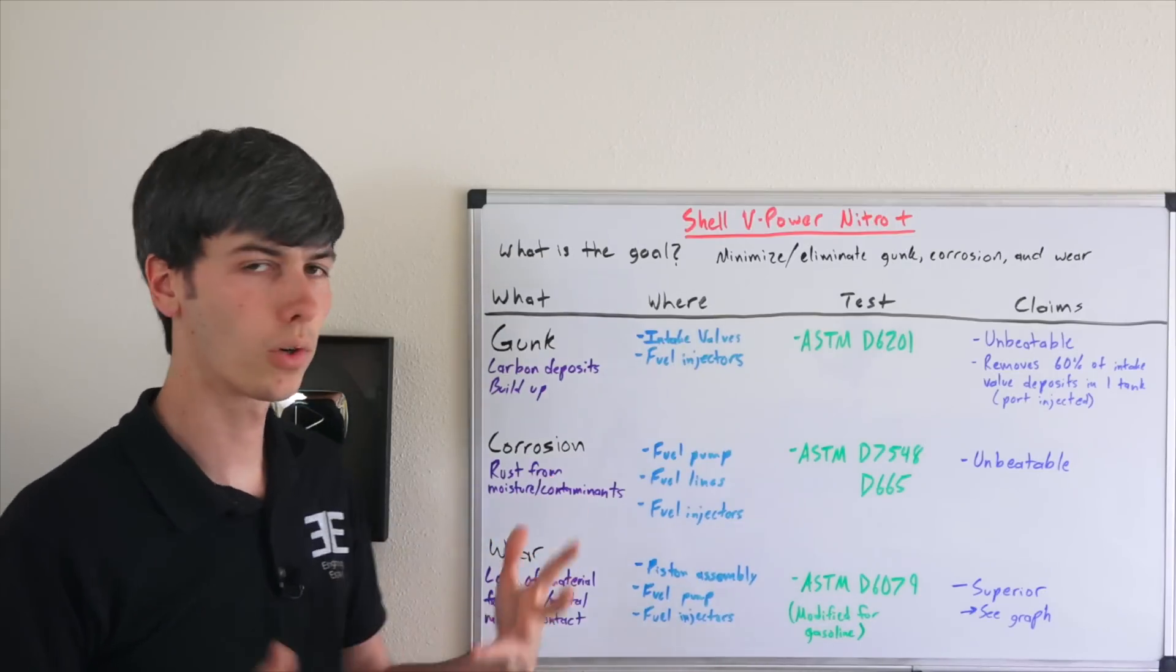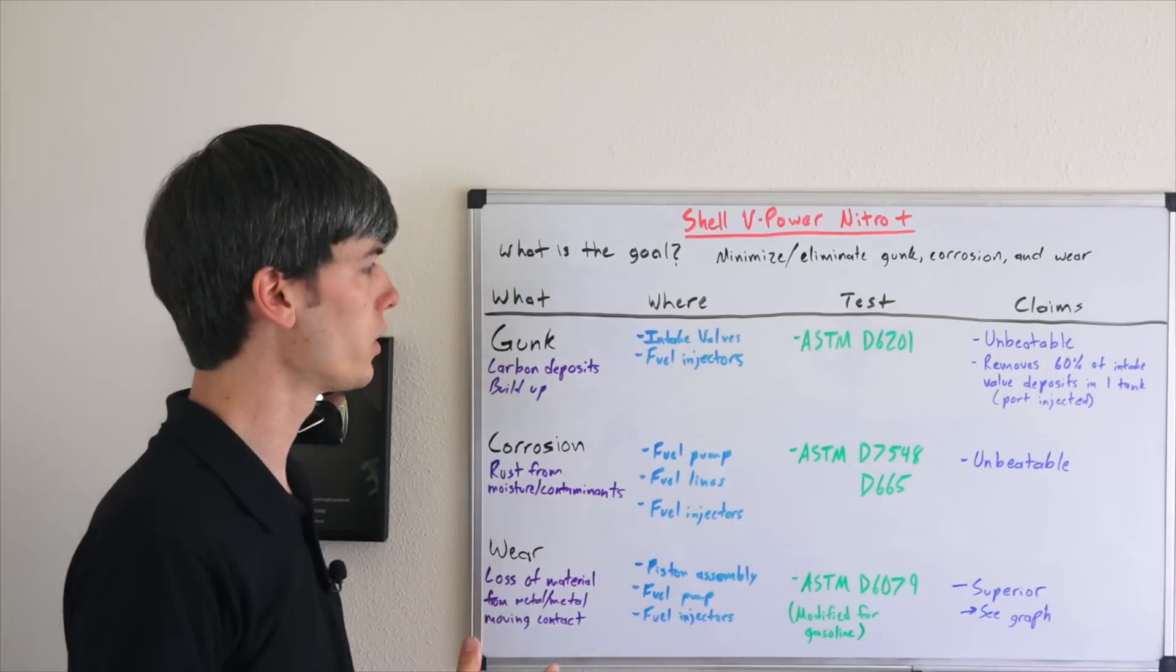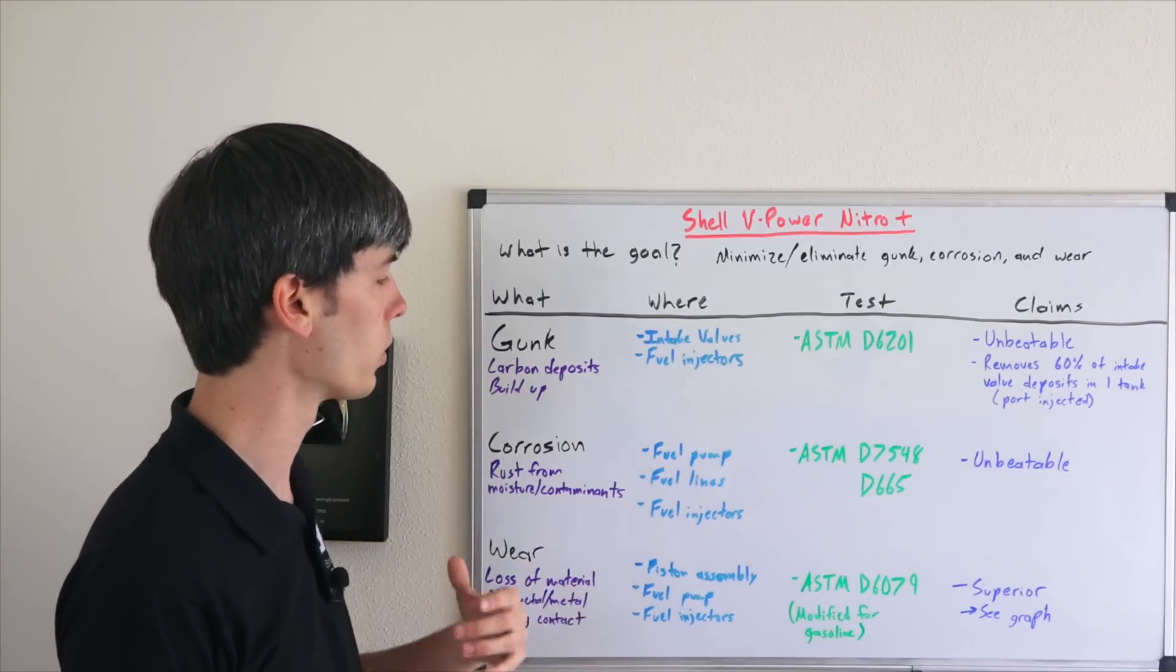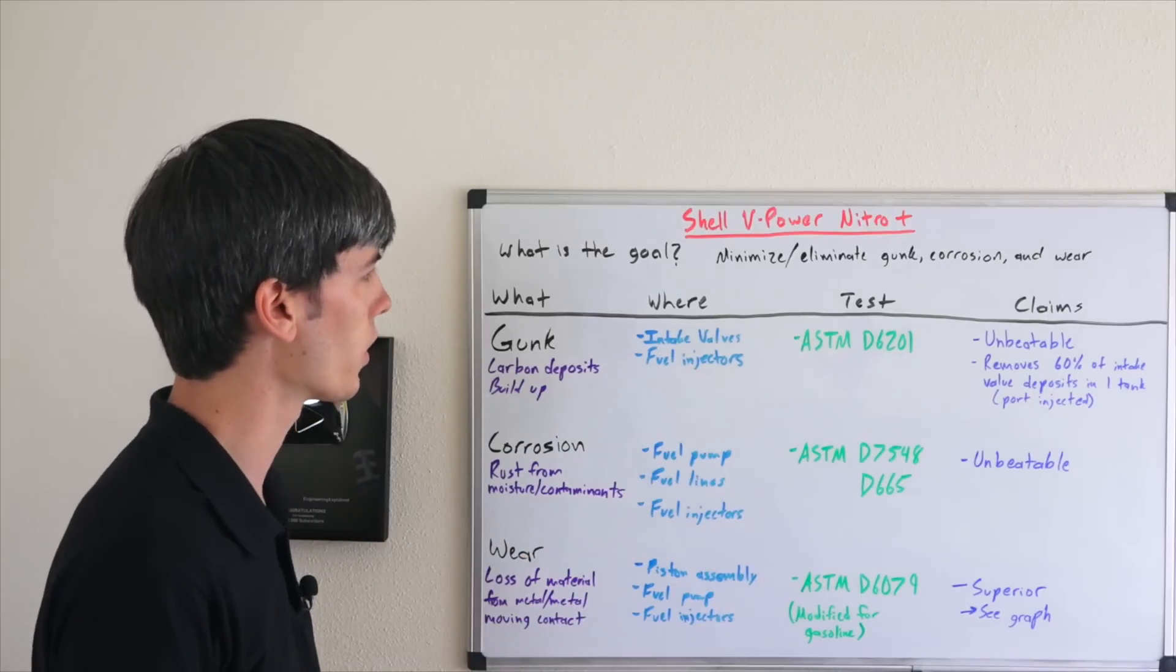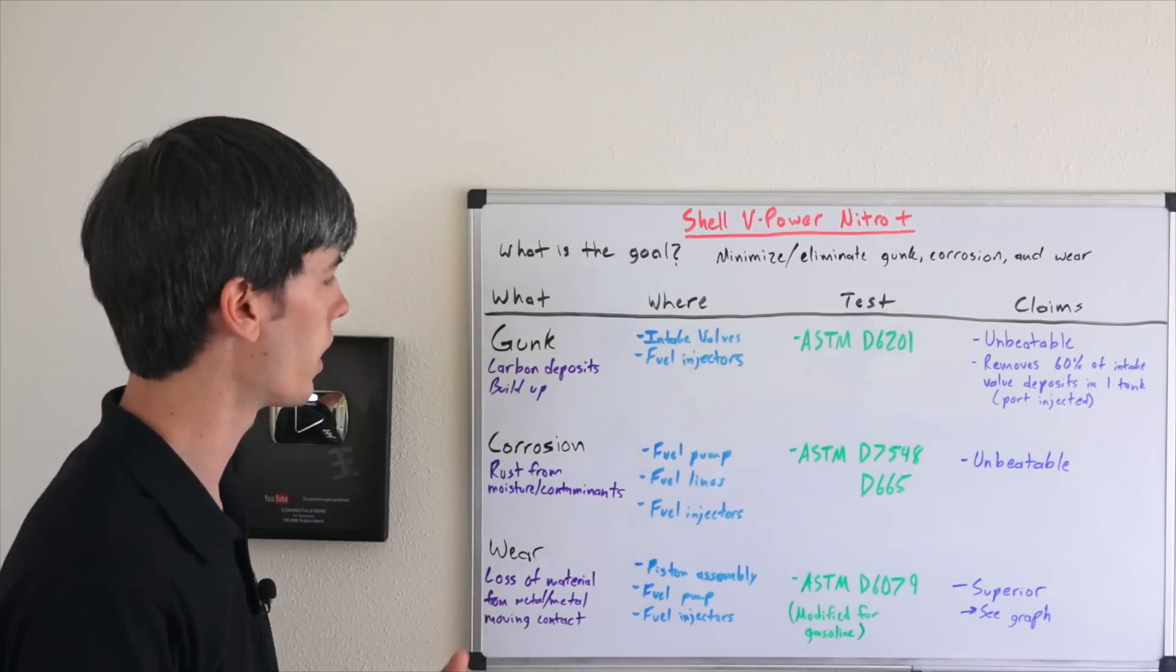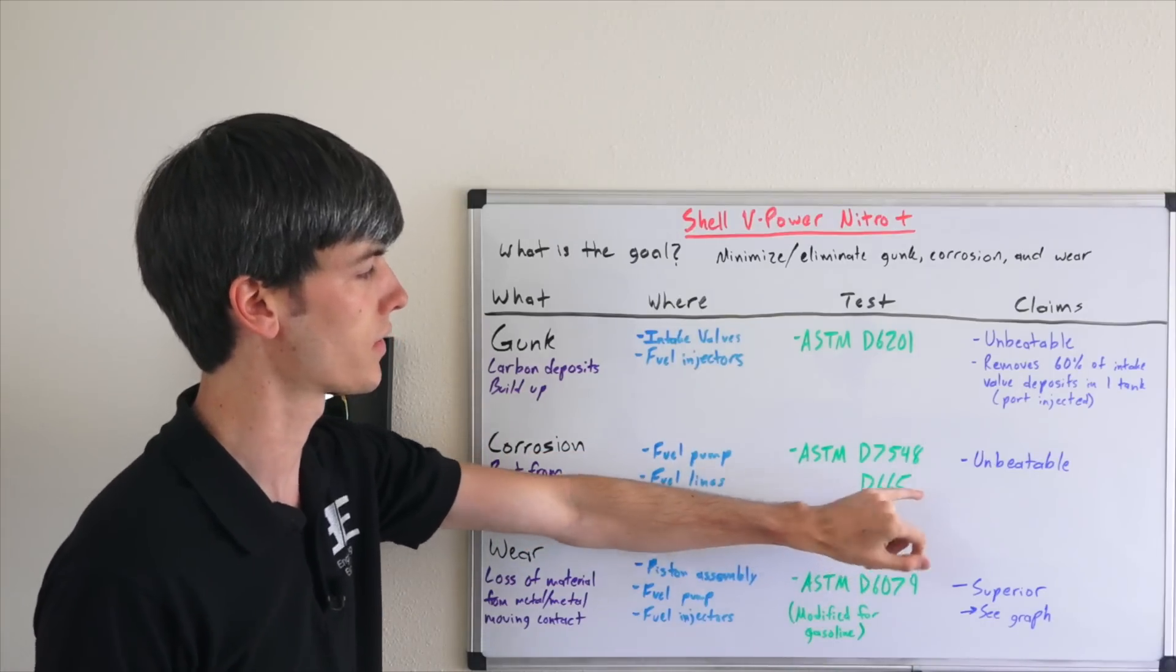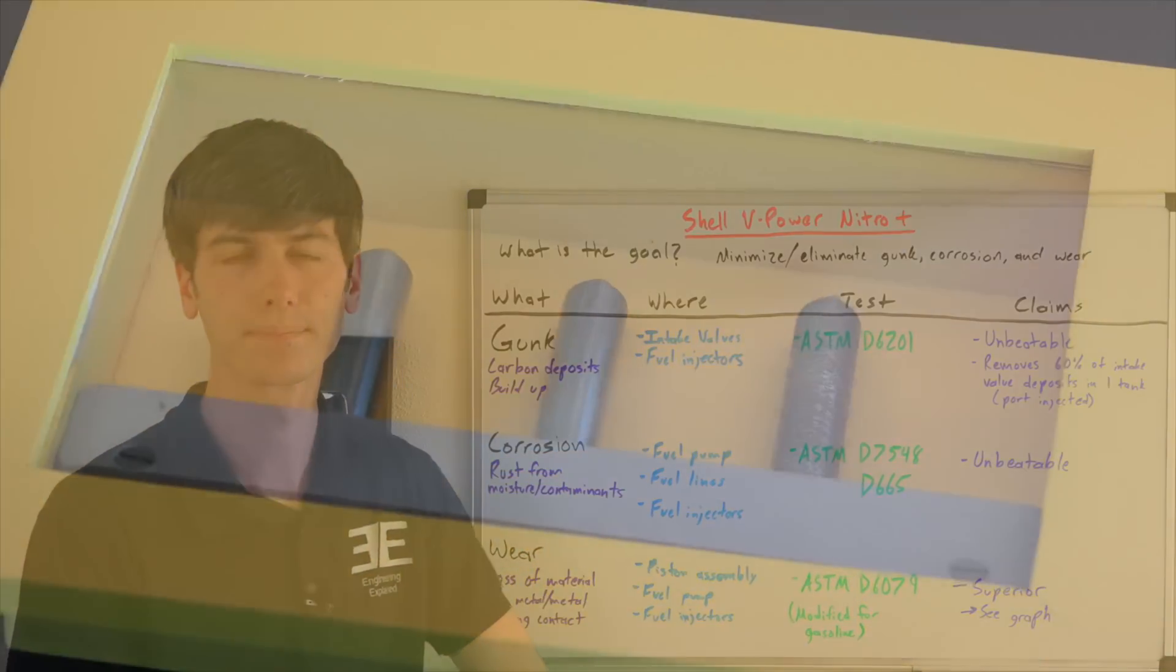Okay, moving on to the next one: corrosion, or essentially rust that could occur from moisture or contaminants within your fuel. Basically what this can damage: your fuel pump, your fuel lines, your fuel injectors. Obviously, you don't want that to occur. The test that Shell use for this corrosion test is ASTM D7548 and D665. So let's go ahead and check out the results from that testing. This is an industry standard test that evaluates the corrosion properties of fuels.